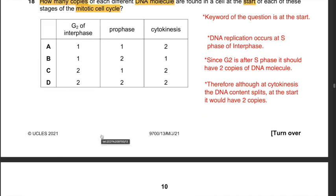Question 18: How many copies of each DNA molecule are found at the start of G2 of interphase, prophase, and cytokinesis? DNA replication occurs at S phase of interphase. All three stages occur after S phase, so each should have two copies. At the start of cytokinesis the splitting has not yet occurred, so it still has two copies. Hence the answer is D: all three stages have two copies.